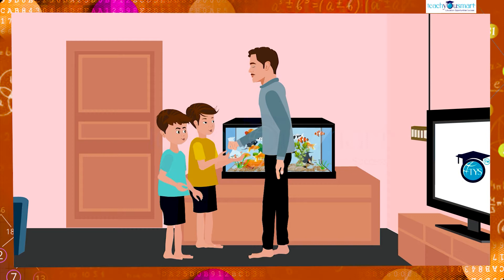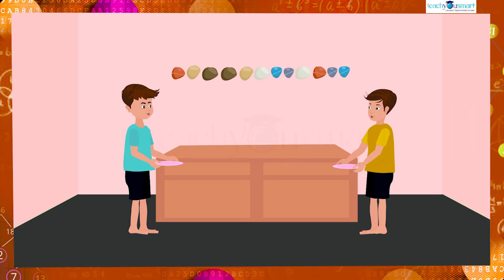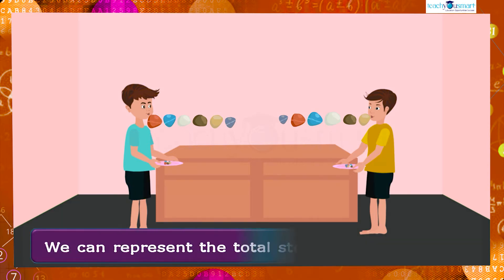David's father gave 12 stones to David and his brother and asked them to divide those between them equally. Can you say how they can divide it equally? Yes, there is a total of 12 stones. If they are taking the stones one by one, each gets six stones in all. Here we can see the stones were arranged in two groups and each group contains six stones. So we can represent the total stones as 12 is equal to 6 multiplied by 2.